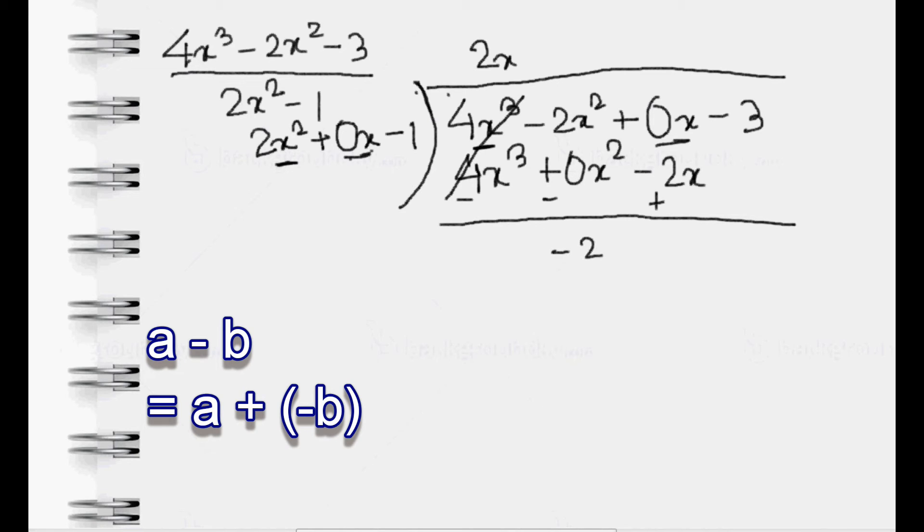Now we subtract. For that, we change the sign. 4x³ - 4x³ is equal to 0, cancel out each other. -2x² - 0x² is equal to -2x². Plus 0x plus 2x is equal to 2x, and -3 comes down.